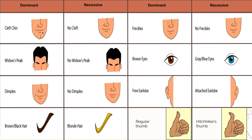Cleft chin looks like a fingerprint in the middle of your chin — Superman is well known for it. Widow's peak means the hair at the top of your hairline is pointed versus more rounded. Dimples appear as indentations on the sides of your cheeks when you smile. Brown or black hair is dominant to blonde. Having freckles is dominant. Brown eyes is dominant to gray or blue eyes. Free earlobes hang away from your cheek, while attached earlobes go straight to the jawline. A hitchhiker's thumb bends backward, while a regular thumb goes straight.